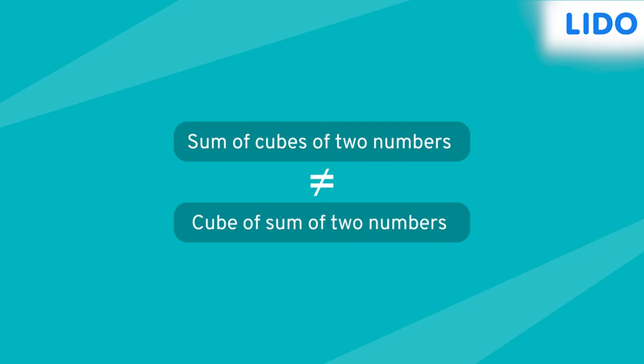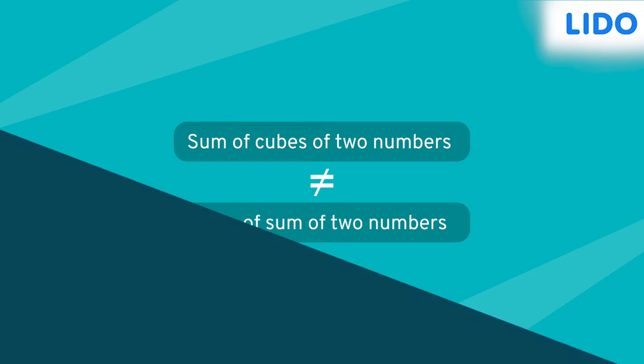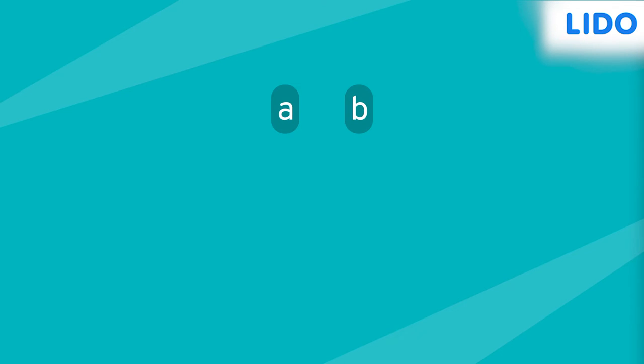The question seems like a tongue twister, doesn't it? Well, let's first understand what the sum of cubes of two numbers means. Let's assume there are two numbers A and B. So the sum of cubes of two numbers means adding the cubes of two numbers, i.e., A cube plus B cube.